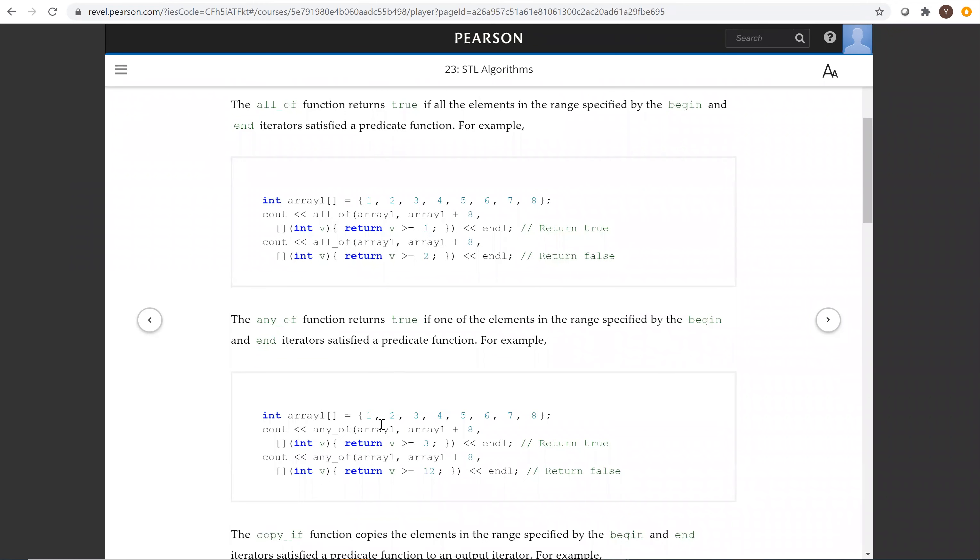The anyOf function returns true if one of the elements in the range satisfies the condition. Here from the beginning to the end, if any of these elements is greater than three, we have three, four, and others, so that's true. For anyOf greater than or equal to 12, that is false.